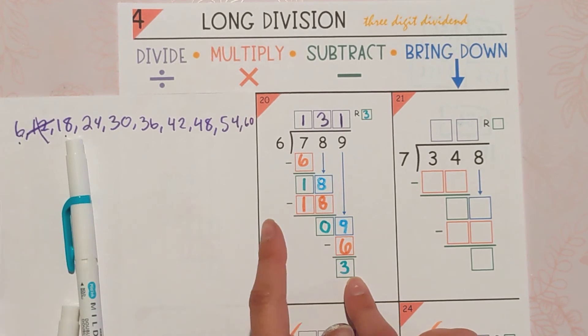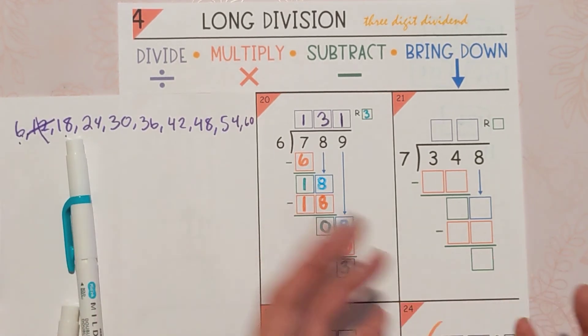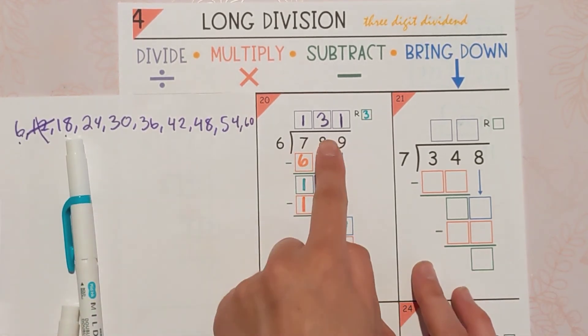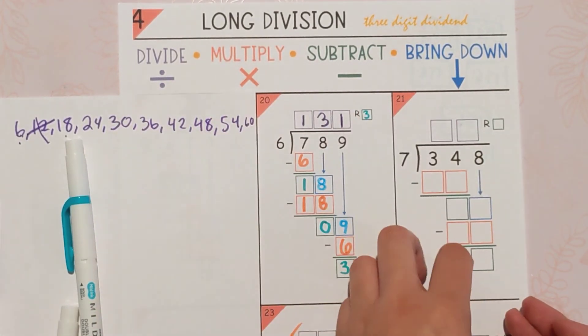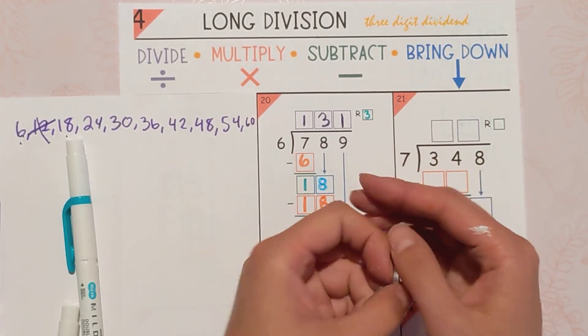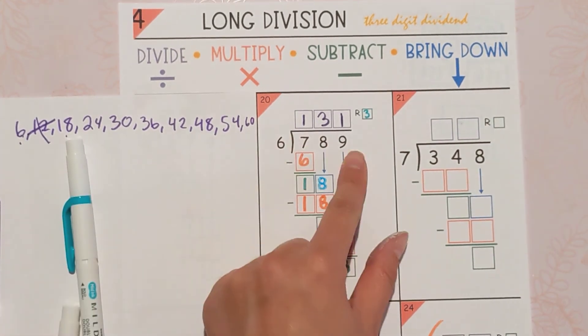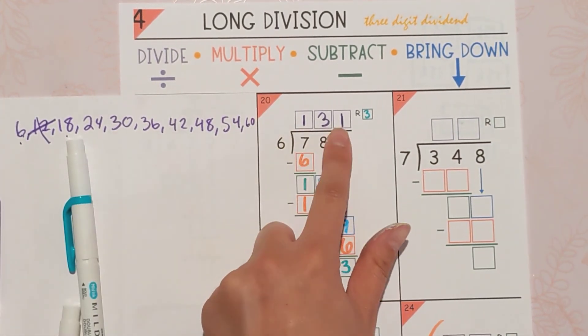So, 789, you can't actually equally divide it by 6. You can put it into 6 groups, and you'll have 131 in each group, but then there'll be 3 left over that you can't divide up. So, 789 divided by 6 is 131, remainder 3.